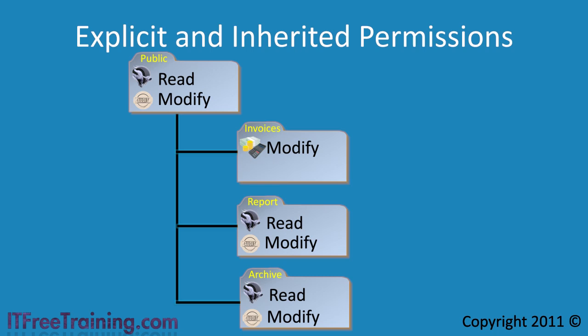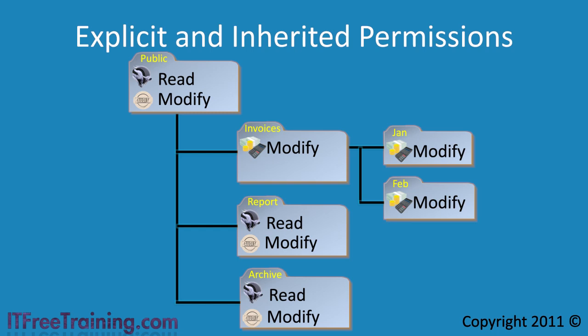Note that just because a directory has explicit permissions does not mean that inheritance is disabled. Any folder created under the invoice folder can still inherit permissions from it. Explicit permissions also work at the file level — if explicit permissions are allocated to a file in the hierarchy, its permissions would no longer change if the permissions above it changed.